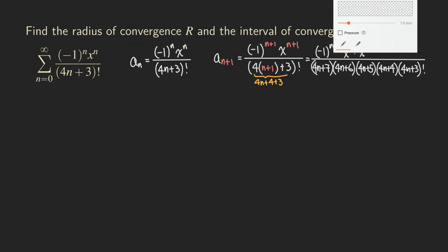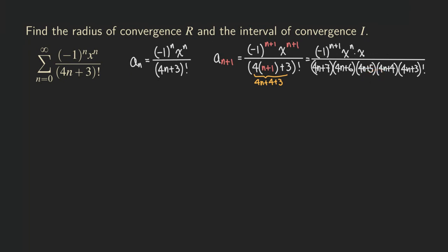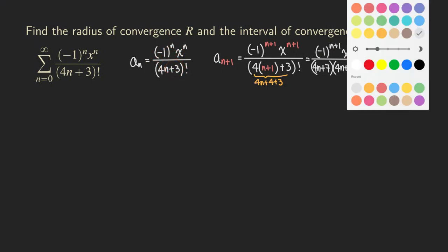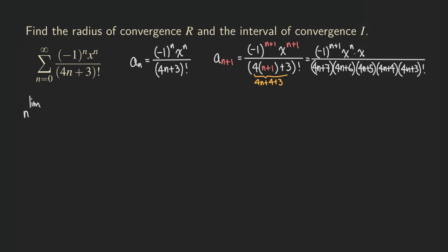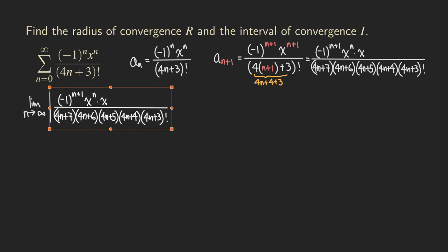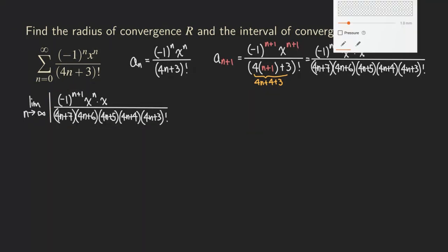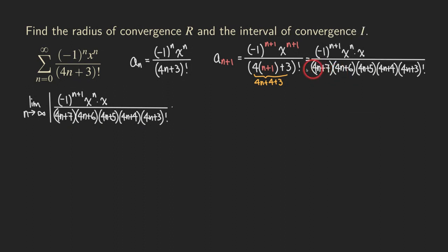Now what are we going to do next? We are going to take the ratio of the two expressions. We are just going to copy a_{n+1} and then multiply by the reciprocal of a_n. Starting with the ratio test, we let n approach infinity. We multiply by the reciprocal, which gives us 4n plus 3 factorial, negative one to the n, and x to the n.